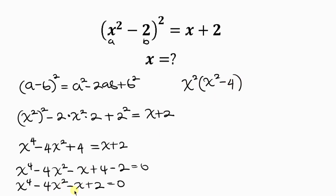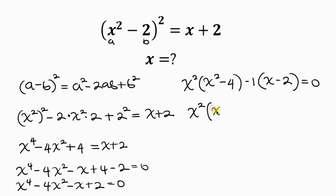Now notice that -1 is common from the remaining terms, so we bring it out: -1(x - 2). So we have x²(x² - 4) - 1(x - 2) = 0. Now, x² - 4 is the same as 2² - 1 ... actually, notice that x² - 4 = (x-2)(x+2).